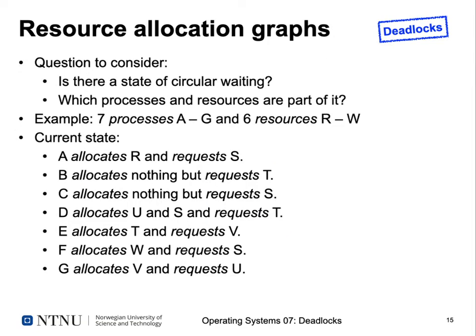When looking at a resource allocation graph, the key question is whether there is a state of circular waiting. We use the graph to figure this out. Once we identify a circle, we can determine which processes and resources are part of the problem.